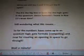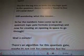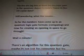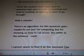Still wondering what this means. So far, the numbers have come up in a quantum logic gate formula, computing, and now for creating an opening in space to go through. Wait a minute. There's an algorithm for this quantum gate. Maybe it's not just for computing, but for showing us how to cut across the orbits in the universe. Cool.